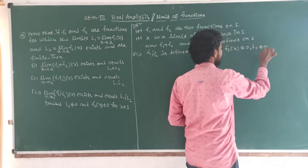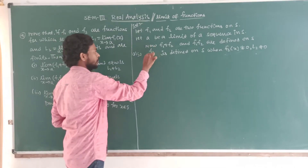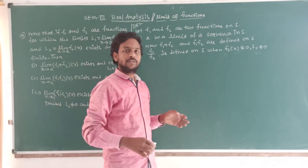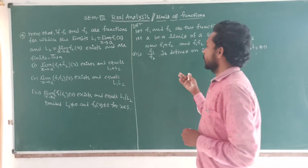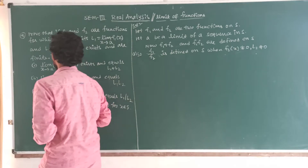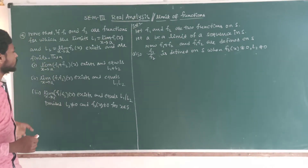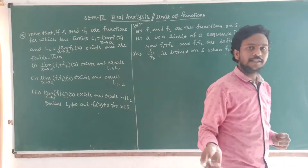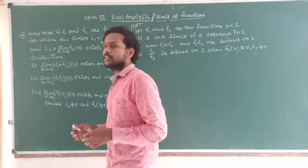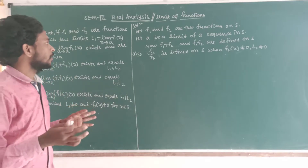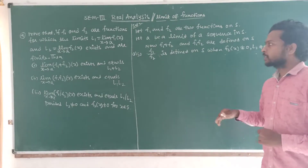If f2(x) = 0, then the division of the two functions would be undefined. So we require f2(x) ≠ 0 for the quotient to be defined. For this theorem, we choose two functions on S where a is a limit of a sequence in S, and f1, f2 — their sum, product, and quotient — are all defined on the same sequence.